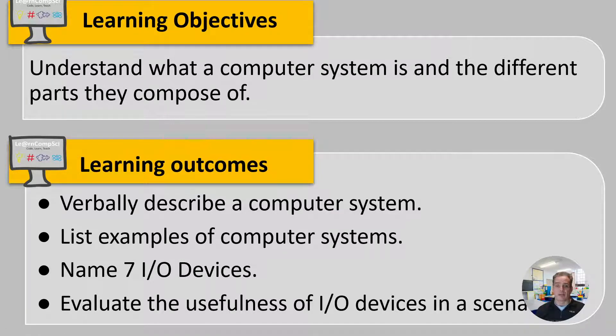By the end of this lesson hopefully what you should as a student be able to do is be able to describe what a computer system is, list some different examples of them, understand what input and output devices are and name at least seven of them and then also be able to think about when different input and output devices might be used for different situations.